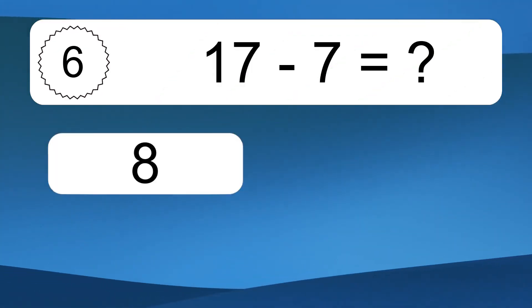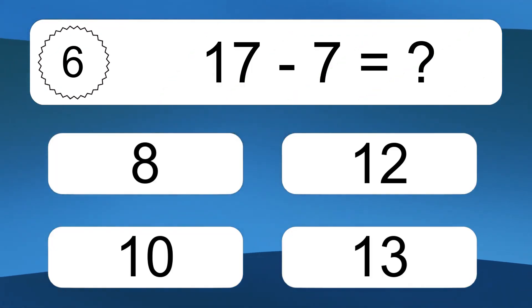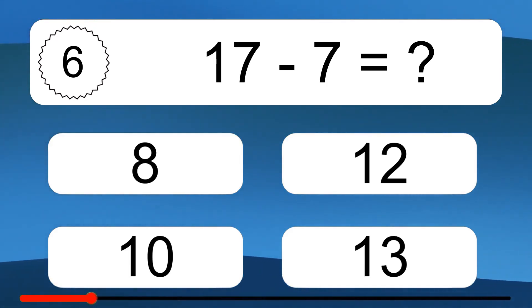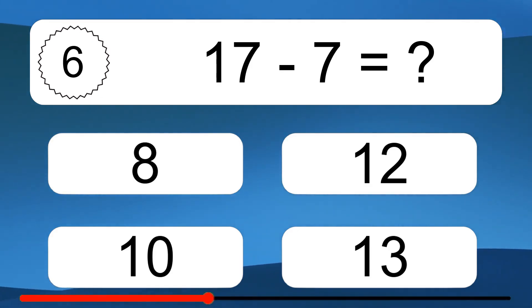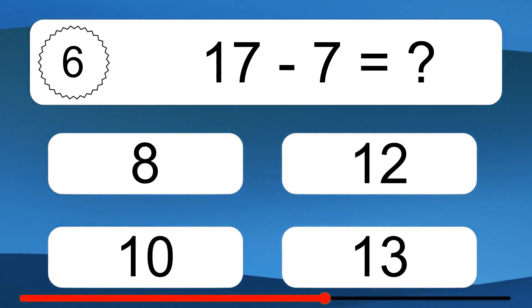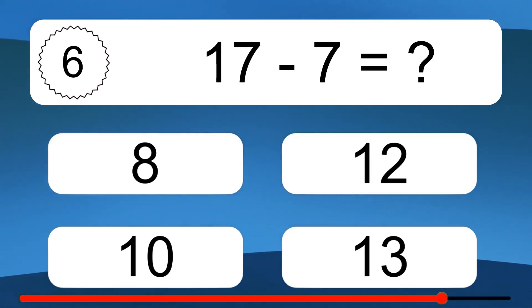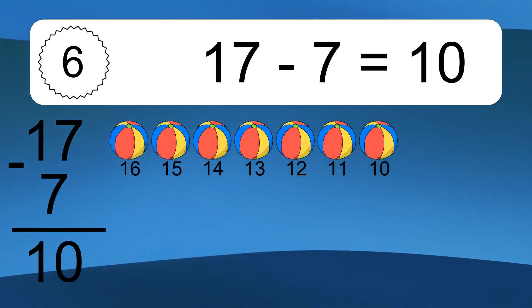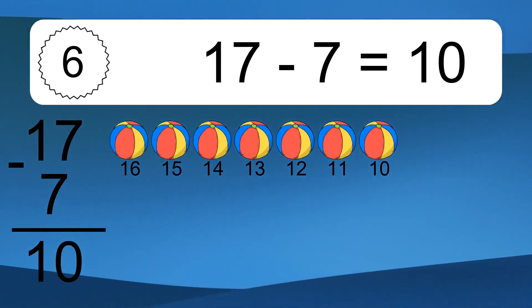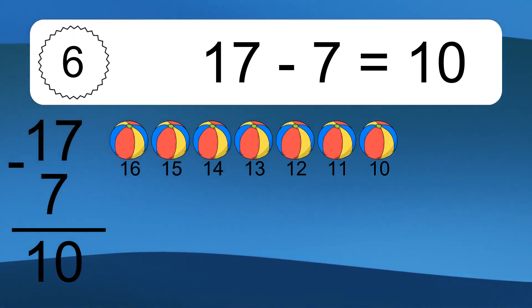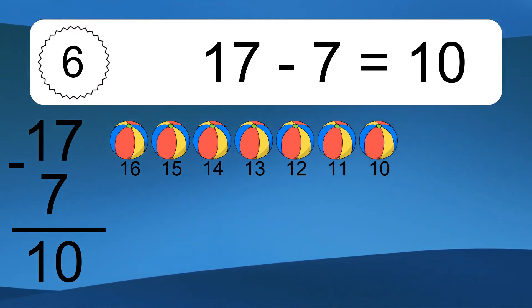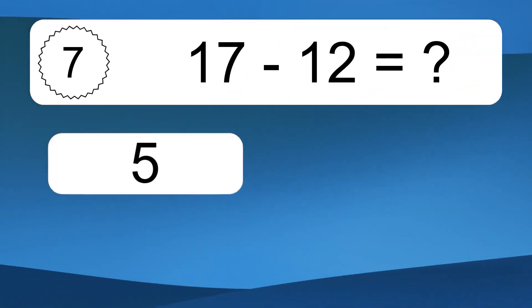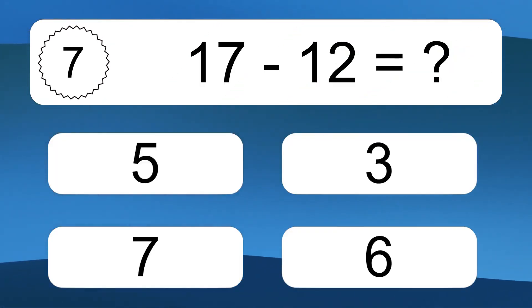17 minus 7 equals what? 17 minus 7 equals 10. Let's count it. 16, 15, 14, 13, 12, 11, 10.